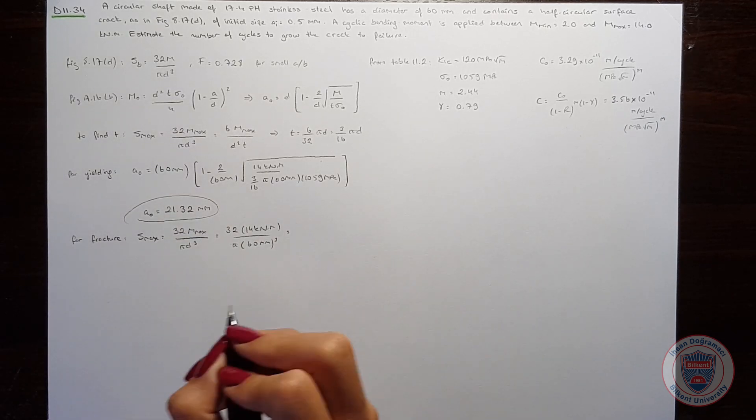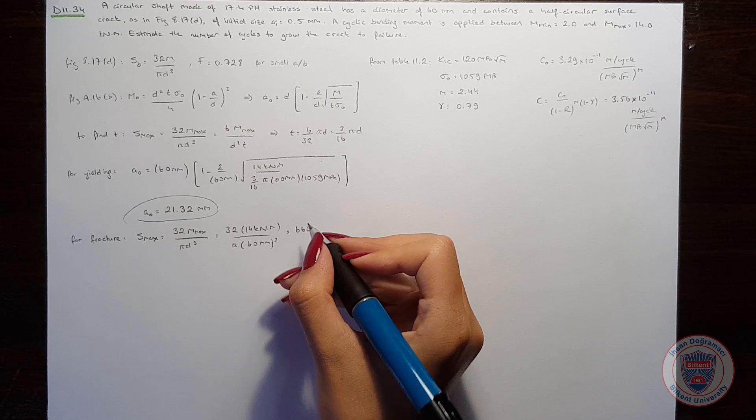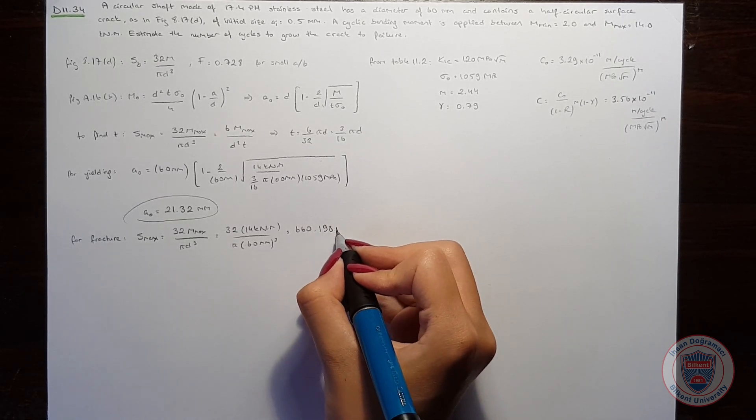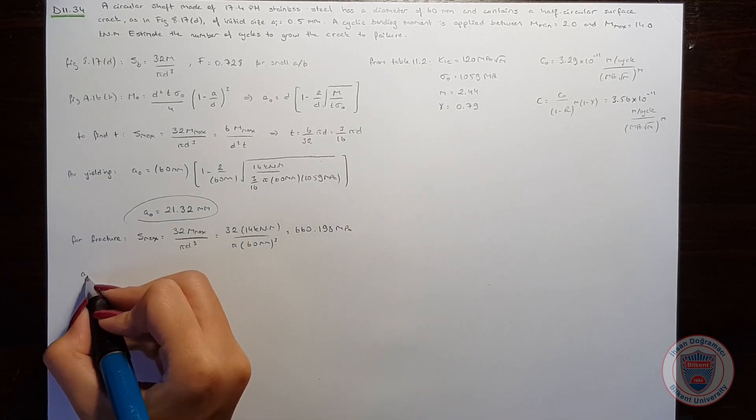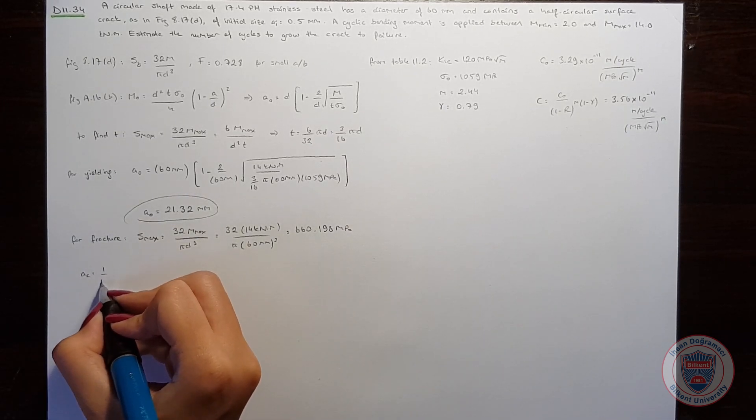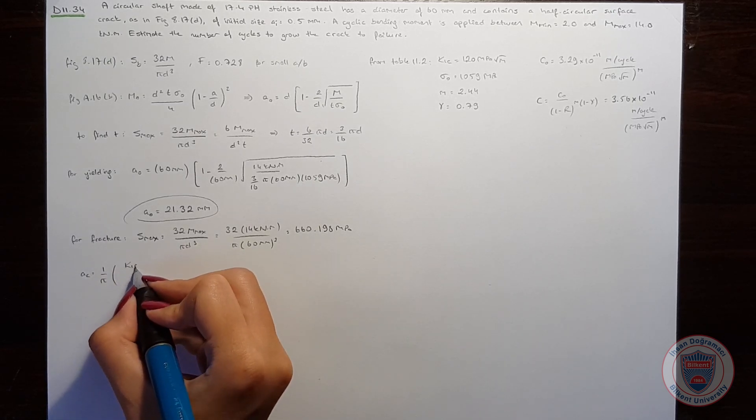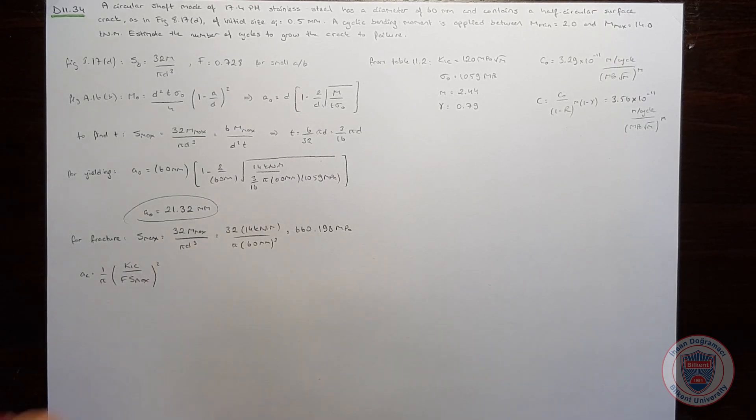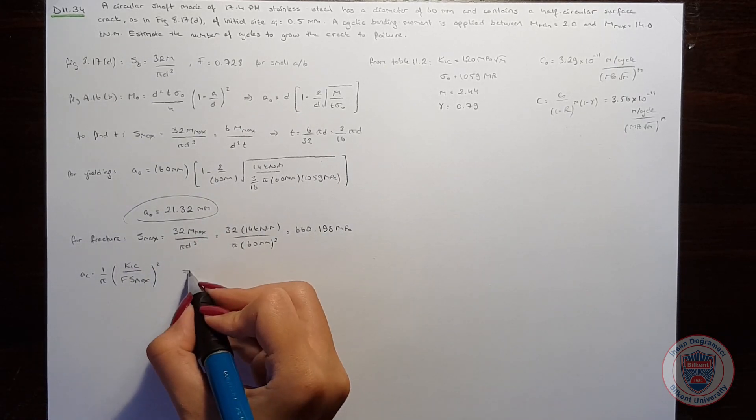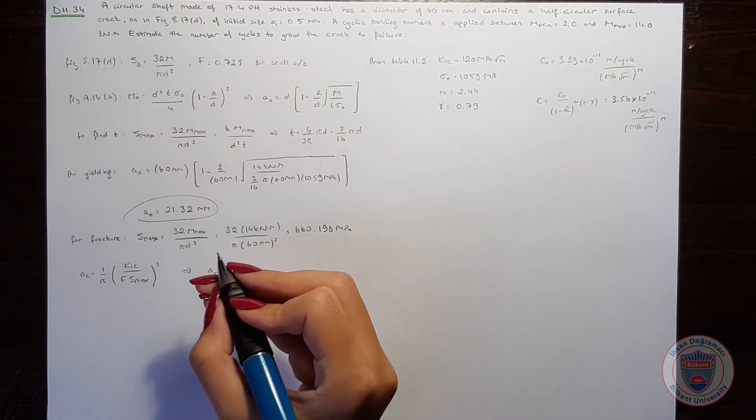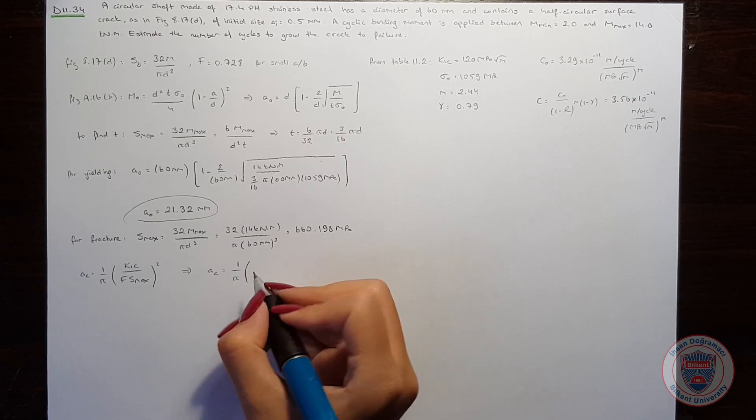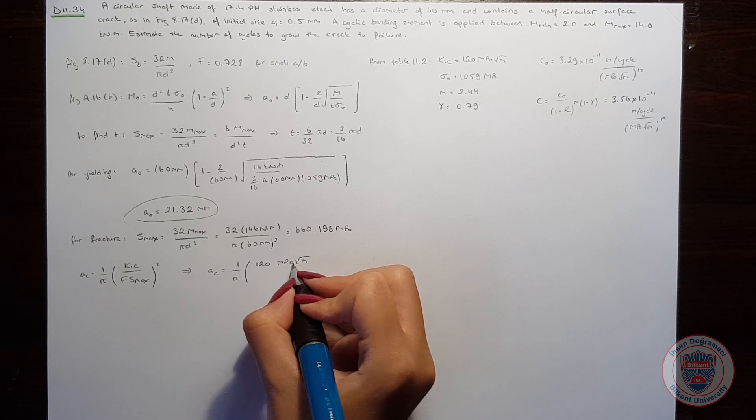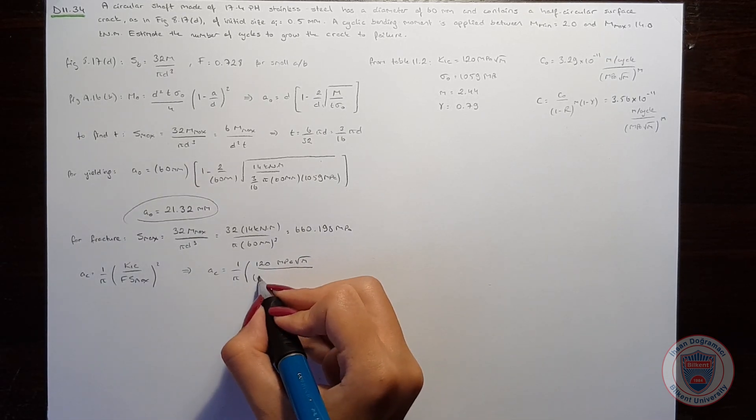And we will have 660.198 MPa. And we know that Ac will be equal to 1 over π times the critical stress intensity factor over F times Smax.